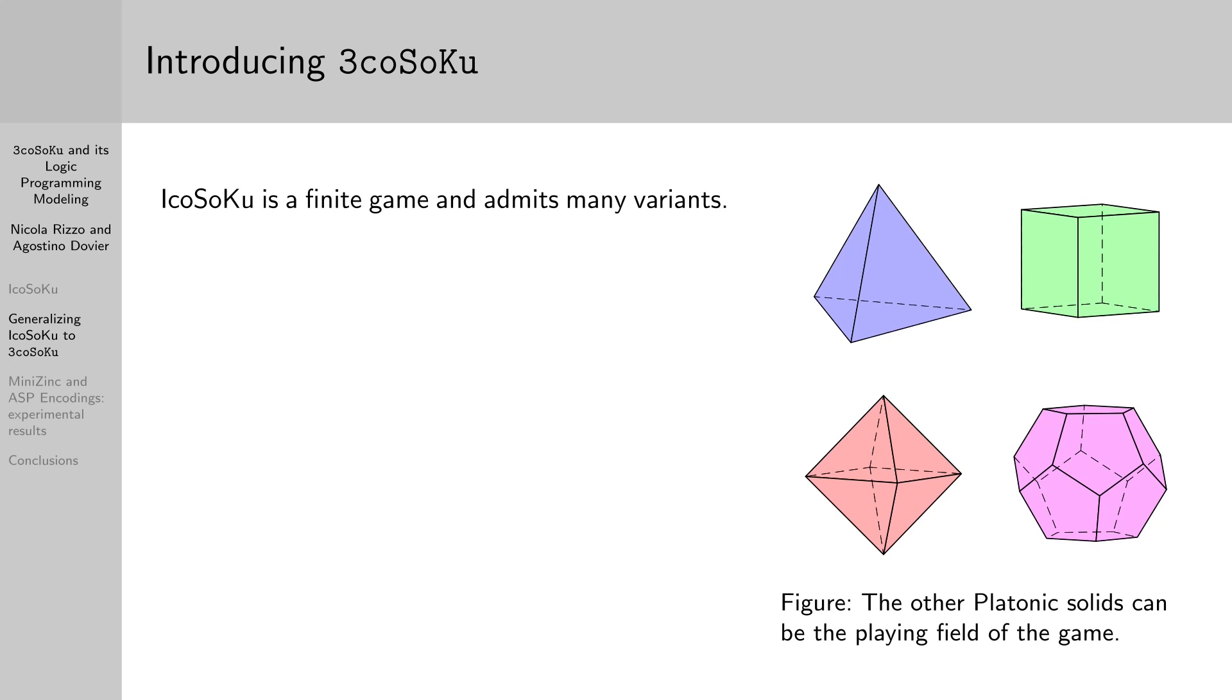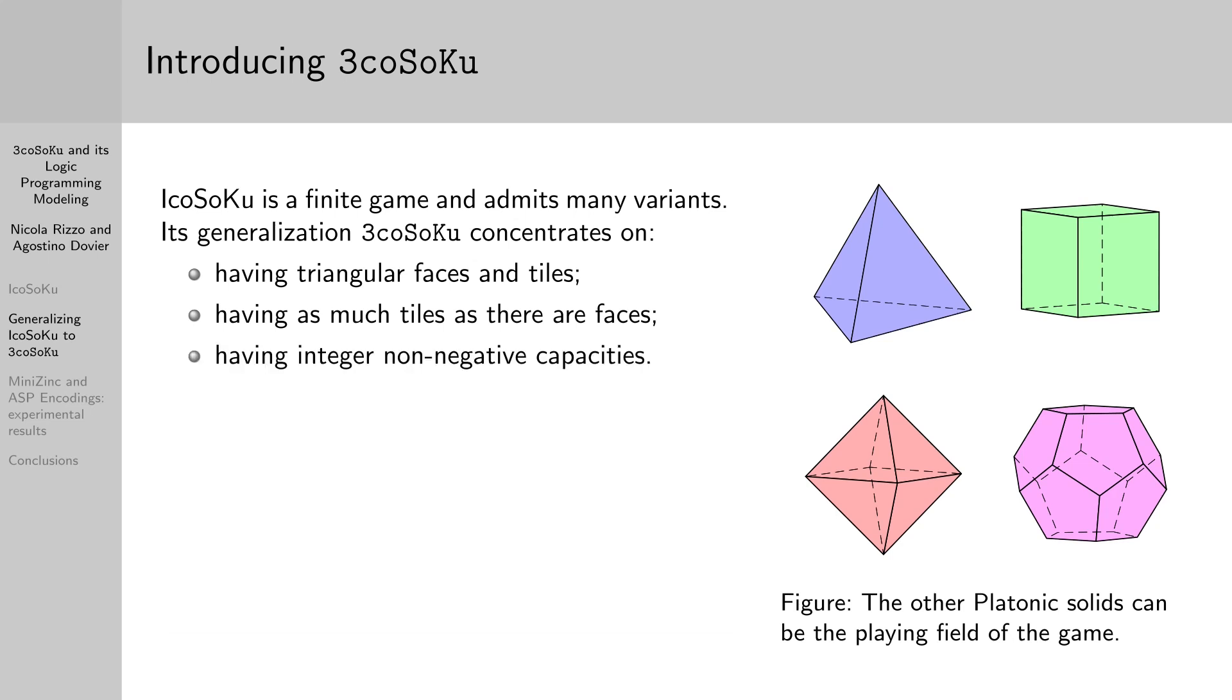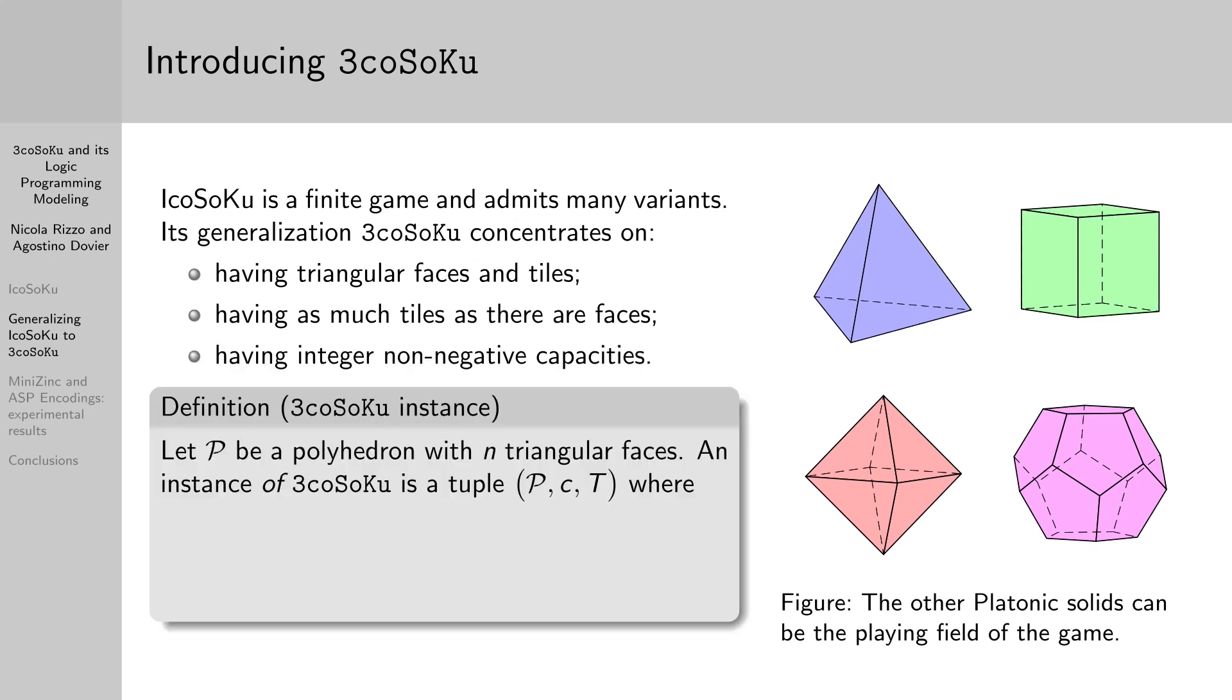There are infinite possible variants of the game, such as using as playing field another platonic solid. We introduce the problem we call 3coSoKu that abstracts from the icosahedron and concentrates on having triangular tiles and faces, having as many tiles as there are faces, and having integer non-negative capacities. An instance of 3coSoKu is a triple given by a polyhedron, a capacity map that assigns to each vertex an integer, and a multi-set of tiles, that is, triples of integer weights.